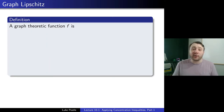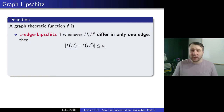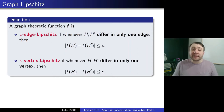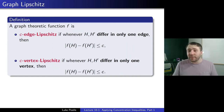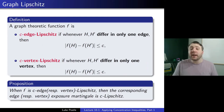Let's define what I call graph Lipschitz. A graph-theoretic function f is c-edge Lipschitz if whenever graphs H and H′ differ in only one edge, |f(H) − f(H′)| ≤ c. Similarly, f is c-vertex Lipschitz if whenever H and H′ differ in only one vertex, |f(H) − f(H′)| ≤ c. An easy proposition is that when f is c-edge or c-vertex Lipschitz, then the corresponding edge or vertex exposure martingale is also c-Lipschitz.